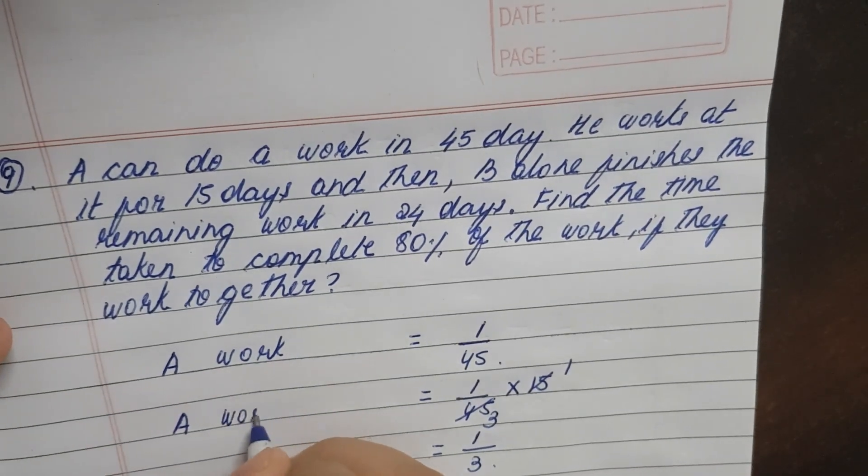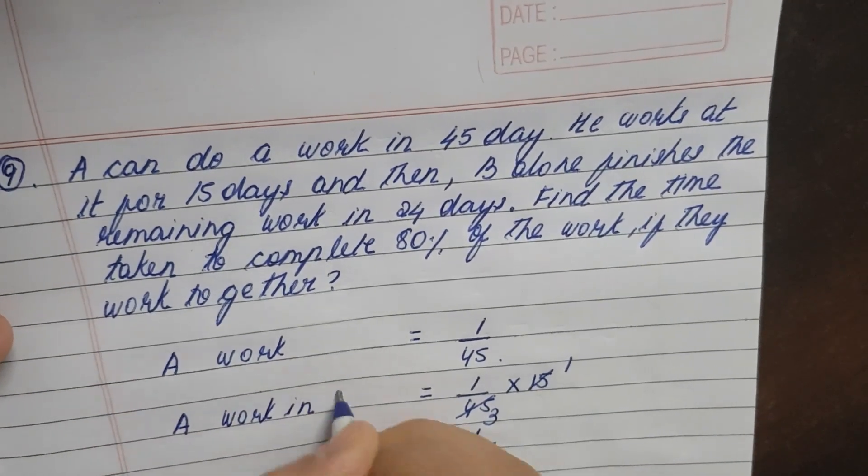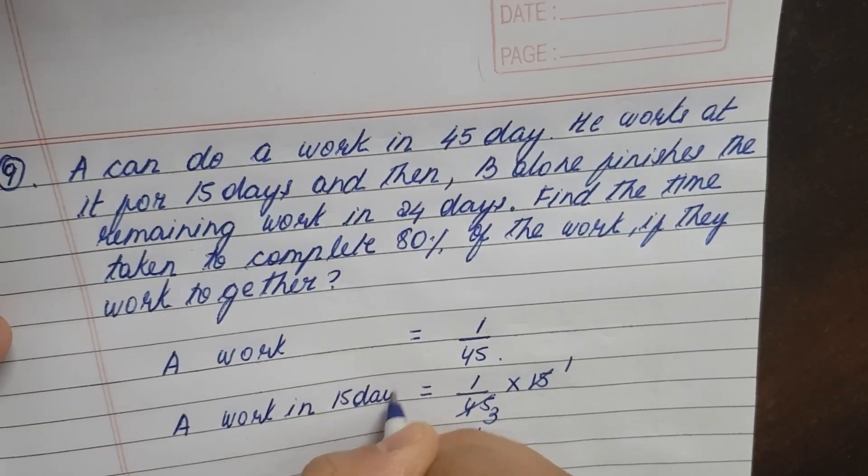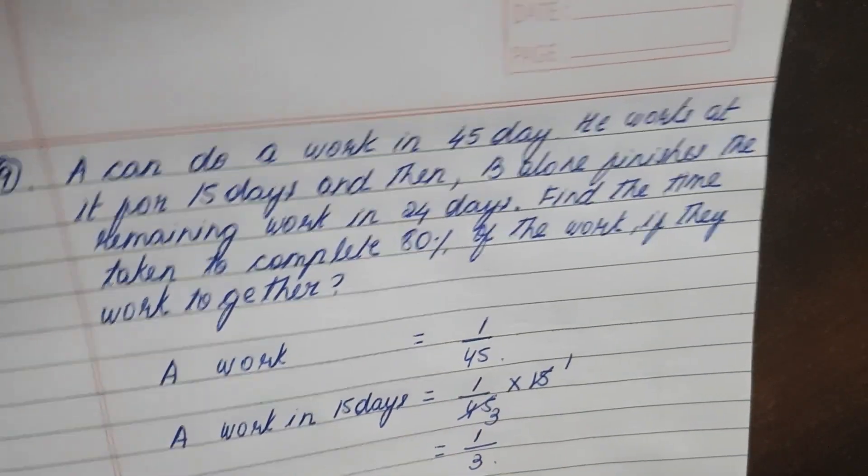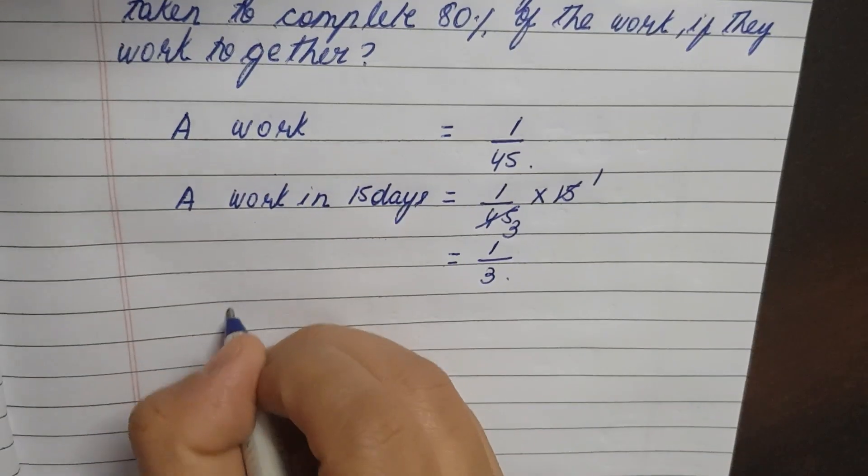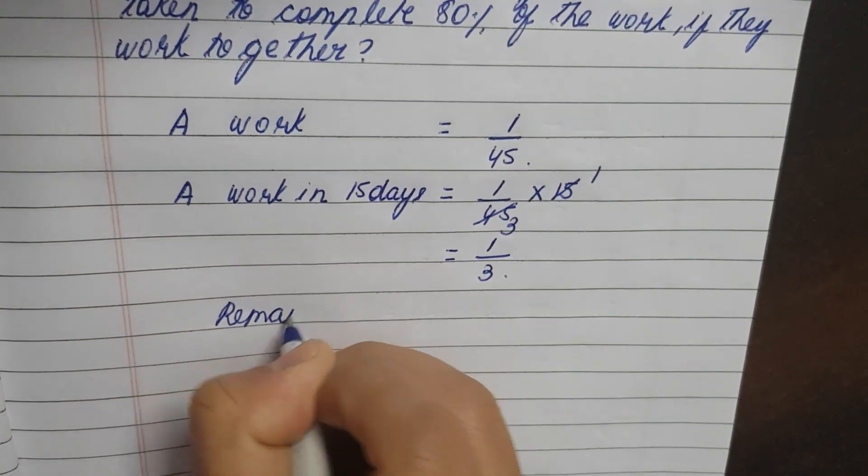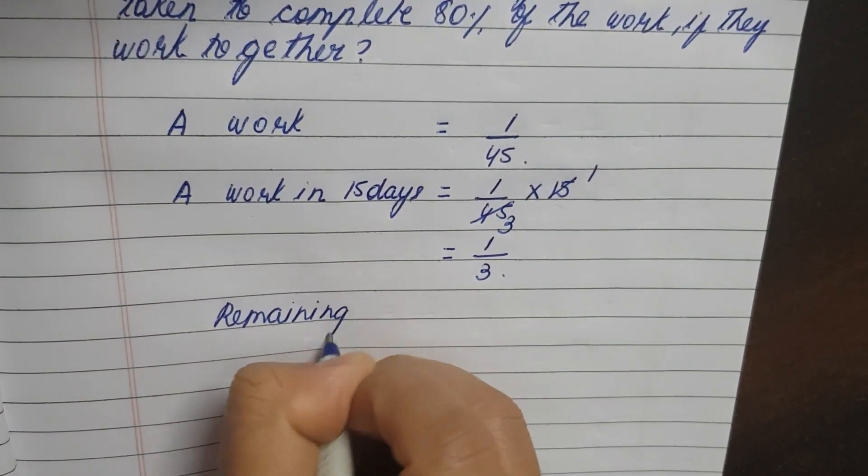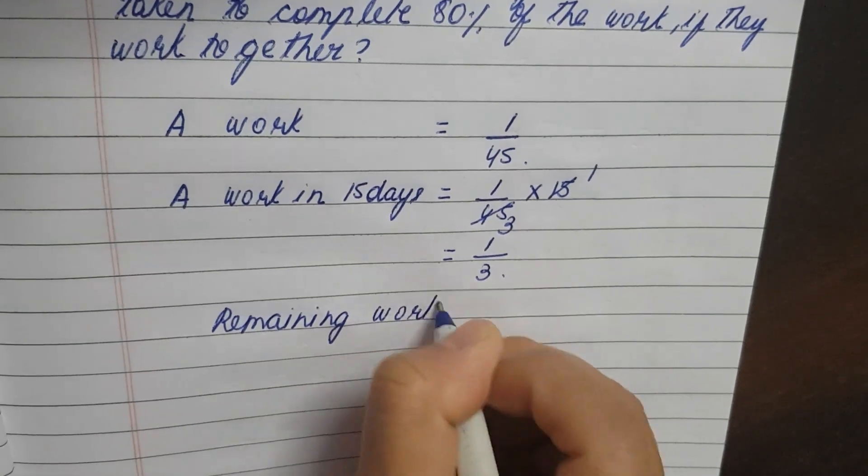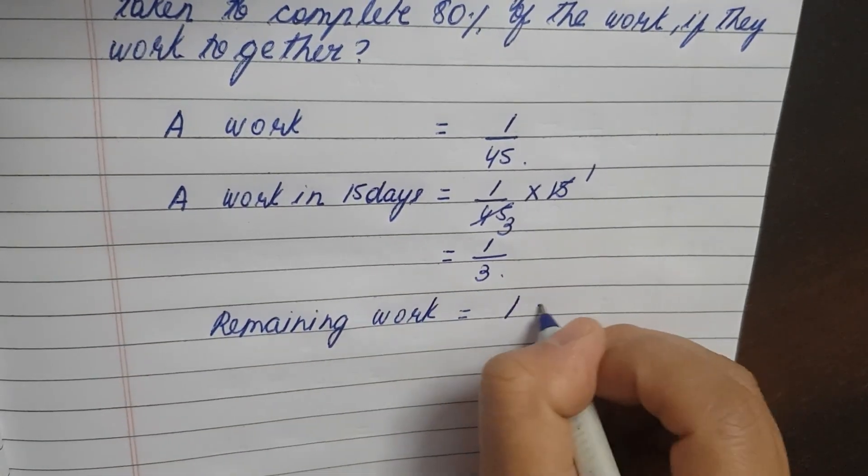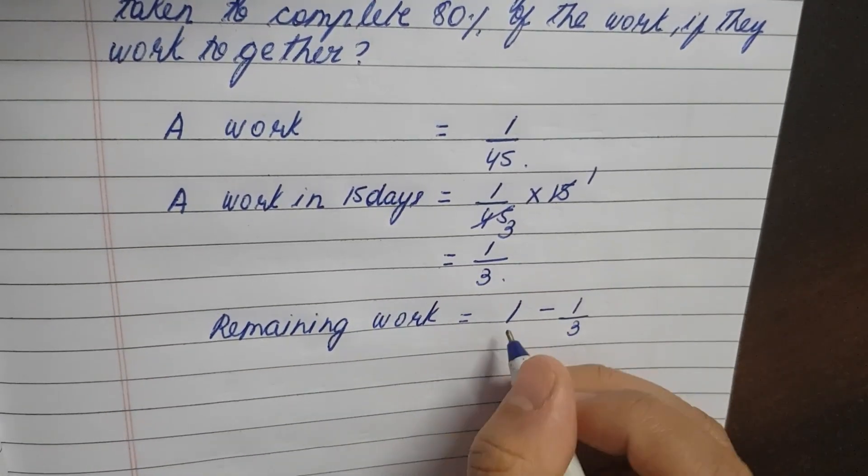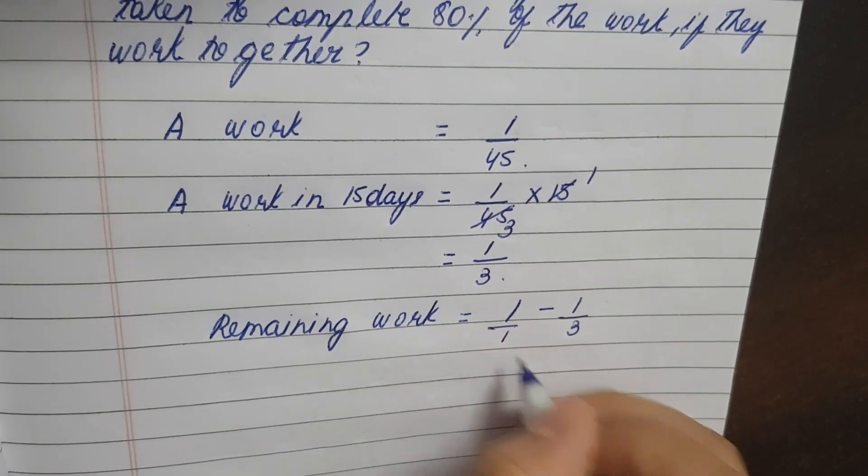A's work in 15 days is equal to 1 by 3. Remaining work we need to find. So remaining work is equal to... we subtract from 1. The denominators are not the same.